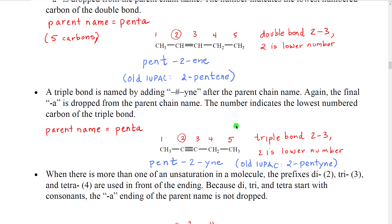A triple bond is named similarly to a double bond, just using a different suffix: I-N-E ('-yne'). We have to put a number separated by dashes, and the final 'a' is dropped because 'y' is treated as a vowel. The number indicates the lowest numbered carbon. So for five carbons with a triple bond at carbons two to three, we get 'pent-2-yne'. In the old IUPAC, that number two would be in front, giving '2-pentyne'.